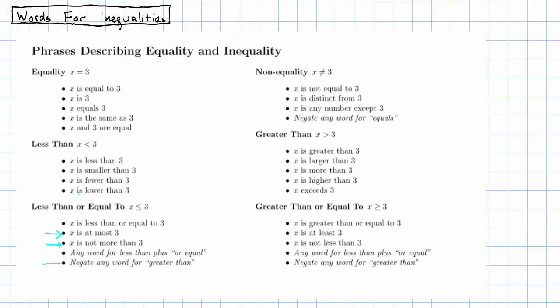More generally, if we take any phrase that describes being greater than and take the opposite—so if I say X is not more than 3, X is not larger than 3, X does not exceed 3—all of those mean less than or equal to. If we negate greater than, that means less than or equal to.